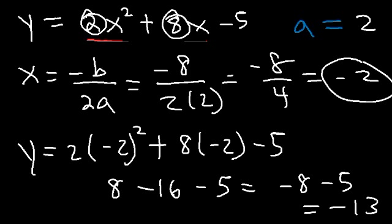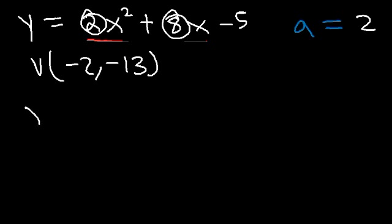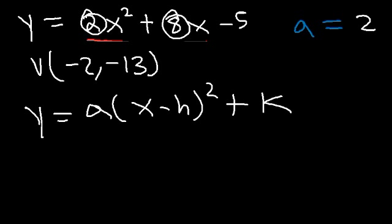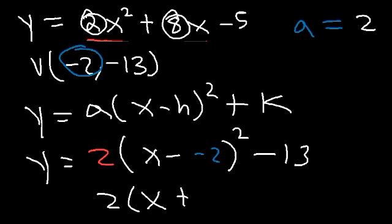So we have the vertex coordinates negative 2, negative 13. The vertex equation is a times x minus h, squared, plus k. So a is 2, h is negative 2, and k is negative 13. Two negatives turn into a positive, so it's 2 times x plus 2, squared, minus 13, which matches what we had before.